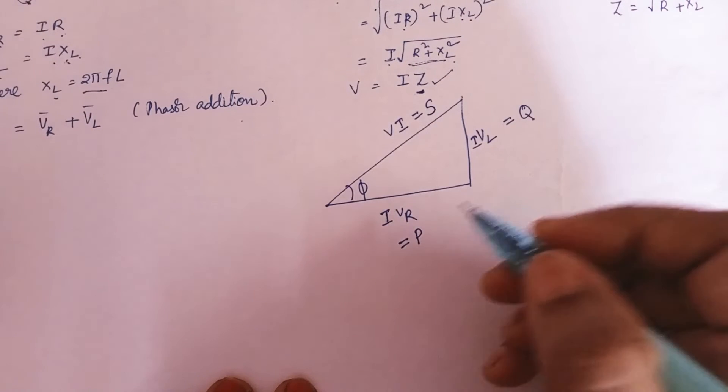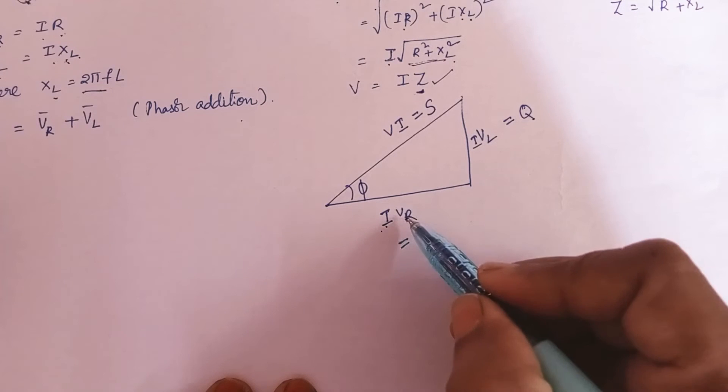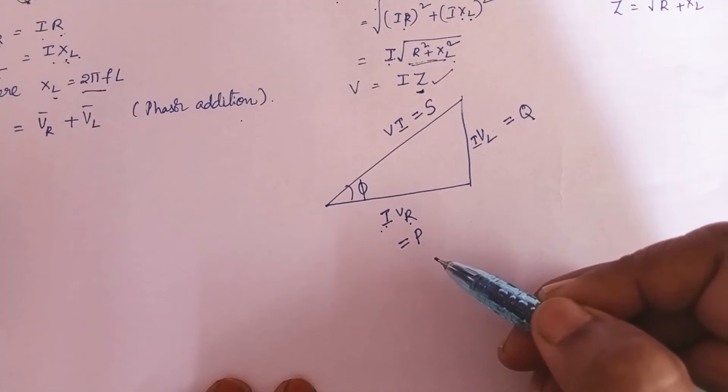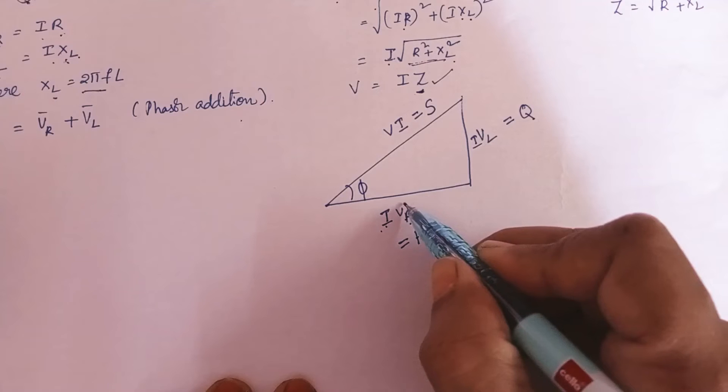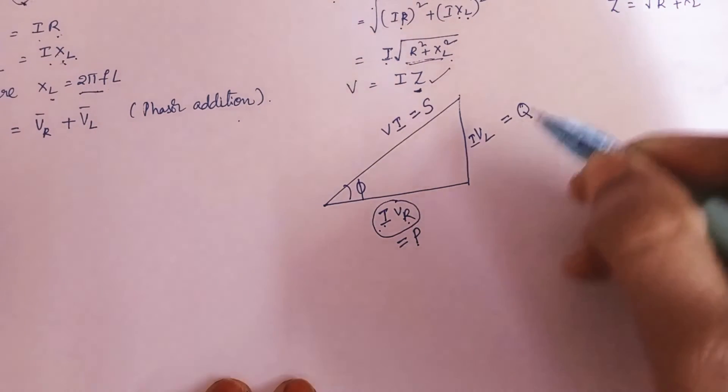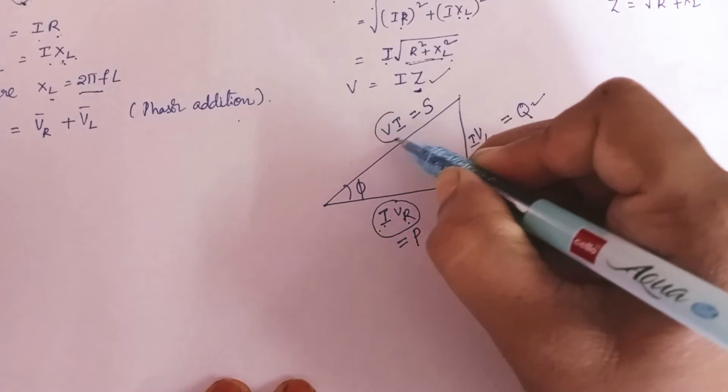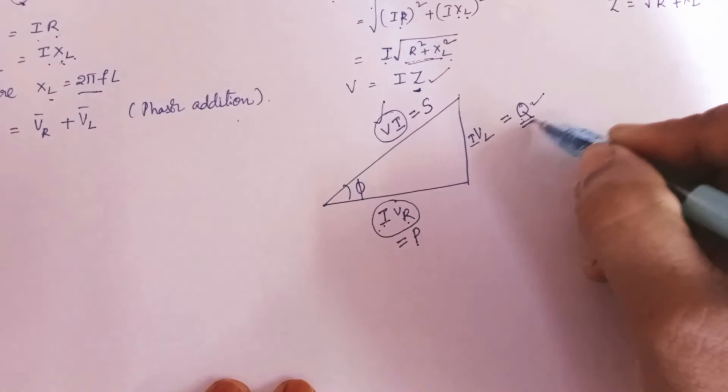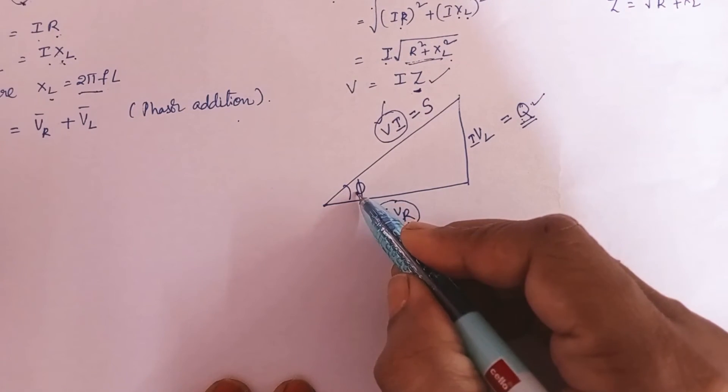So if you want to derive that in a standard notation that everywhere has been observed, what we can do? So instead of writing this V into I into Vr, let me call this side as P, this side as Q, this side as S which is VI. You can consider VI here. So on this side you consider only Q, on this side you consider only P. So this angle is phi.